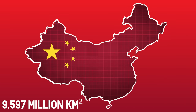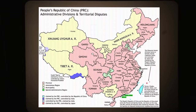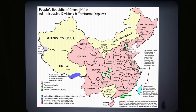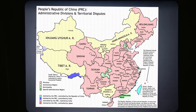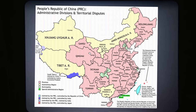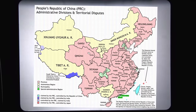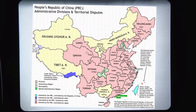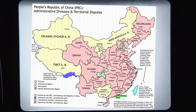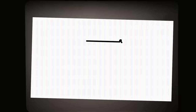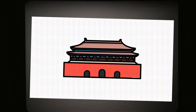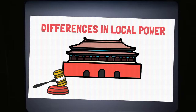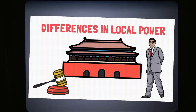Most of the country is divided into provinces, shown here in pink. Macau and Hong Kong are special administrative regions. Beijing, Tianjin, Shanghai and Chongqing are municipalities in light green. Xinjiang, Tibet, Inner Mongolia, Ningxia and Guangxi Zhuang are autonomous regions. This causes differences in local power and autonomy, and the laws they follow, but they are ultimately all controlled by the central government.